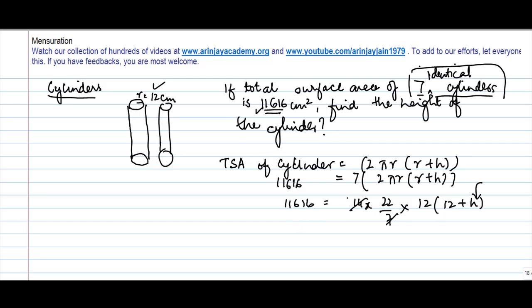So I reduce this and this so I get 2. So I have 2 into 24. 2 into 24 is 44 into 12. 48, 4 carry 52. So 528 into 12 plus h is equal to 11,616.